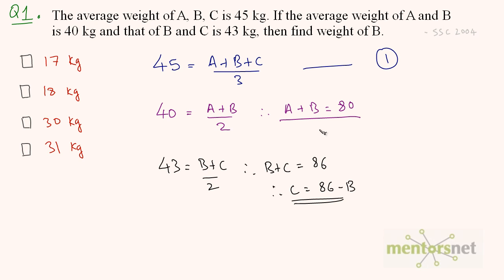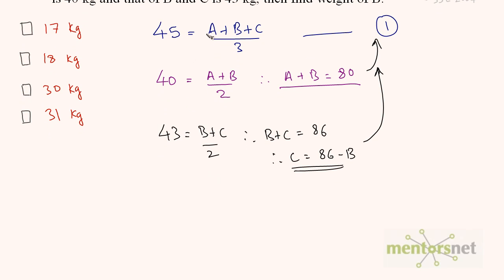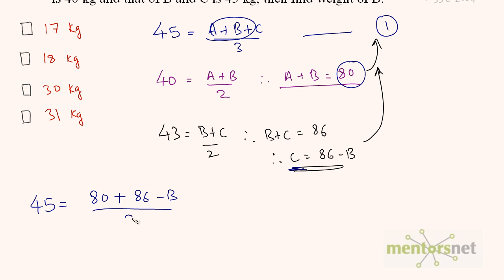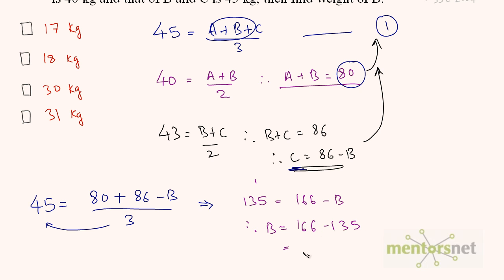We can put these two equations into equation 1 to get the weight of B. We have 45 equals A plus B plus C divided by 3. So we can write 45 equals 80 plus C's value which is 86 minus B, all divided by 3. Moving the 3 to the left: 135 equals 80 plus 86 minus B, which is 166 minus B. Therefore, B equals 166 minus 135, which is 31 kgs.